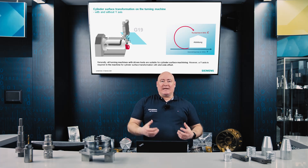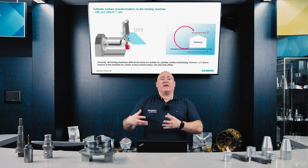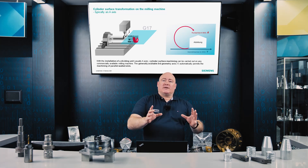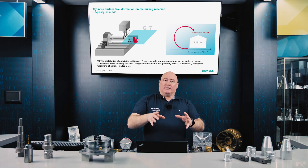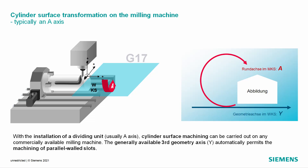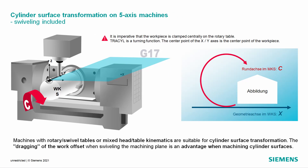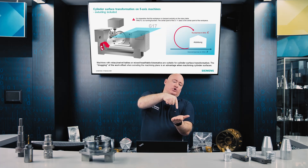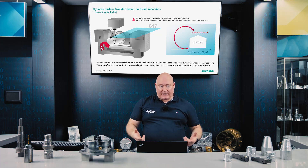For turning machines, any turning machine with driven tools is suitable for peripheral surface transformation. For milling machines, with a three-axis milling machine and a dividing unit installed — this usually then becomes an A-axis — TRAS-CIL peripheral surface machining is also possible without any restrictions, with and without slot-side offset. For five-axis machines, machines with rotary swivel tables or mixed-head table kinematics are also generally suitable for peripheral surface transformation. By pulling along the work offset, work is process-safe at all times, because the distance between the tool tip and the workpiece always remains the same, even when swivelling.